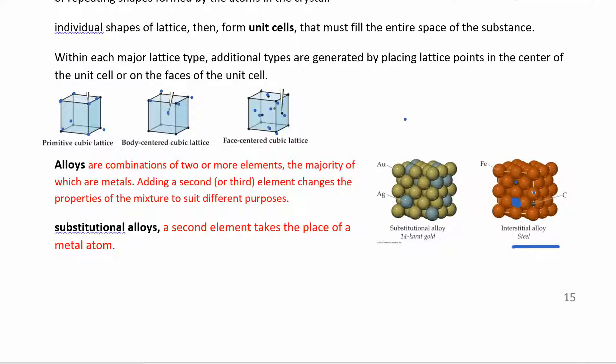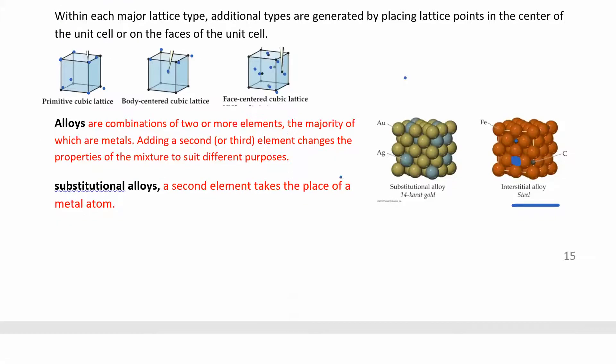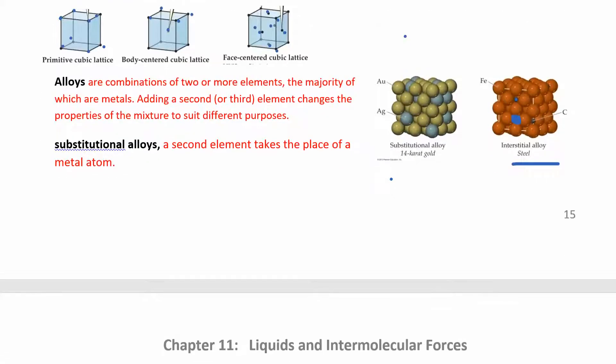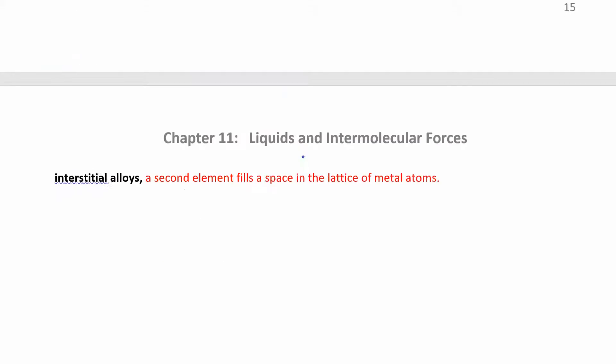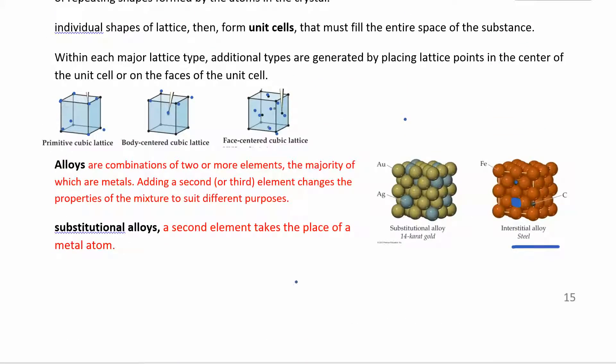So you get an interstitial alloy when you have a big atom, and you're adding a tinier atom to it. And you can play with the properties of the alloys by adding different elements to them or different amounts. So you can have one with a lot of carbon will have certain properties, one with a little bit of carbon will have other properties. And so that's kind of why you make alloys, to change the properties of whatever metal you're looking at. So a substitutional alloy is when a second element takes the place of a metal atom. And then an interstitial alloy is when that second element fills the space of the lattice formed by the metals.